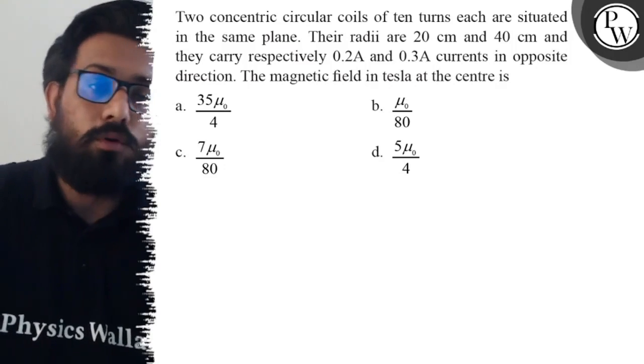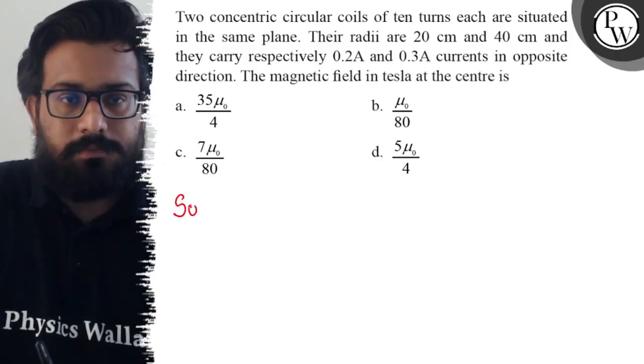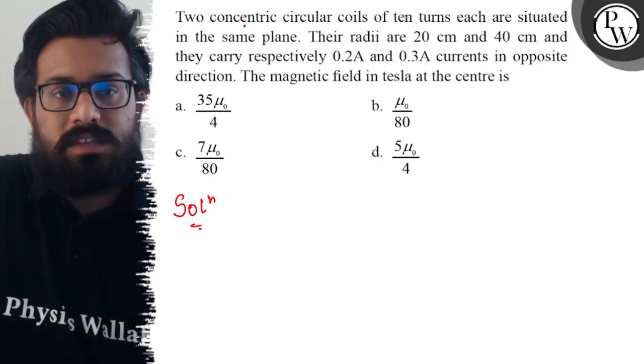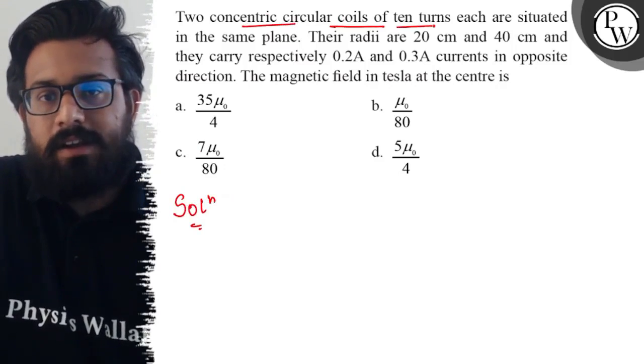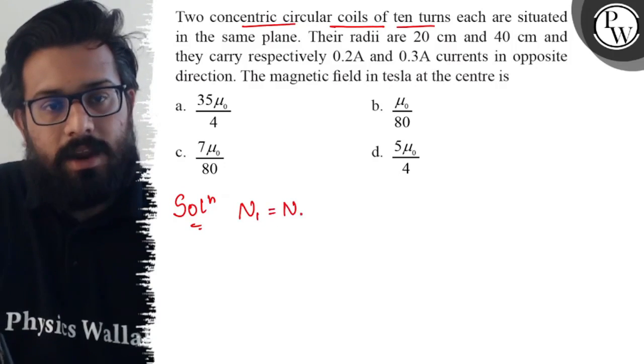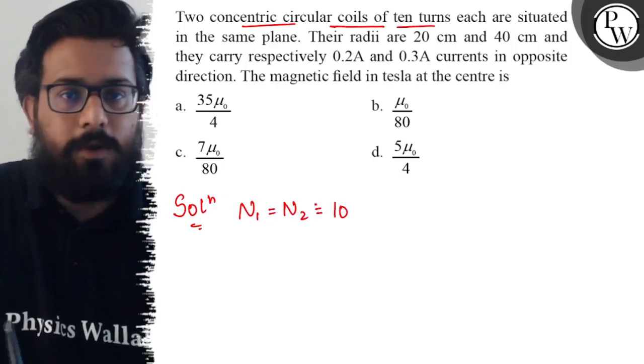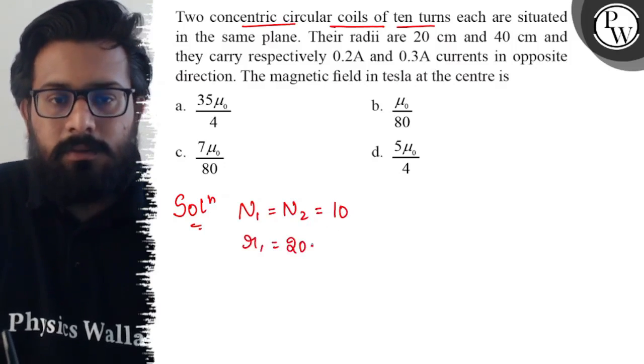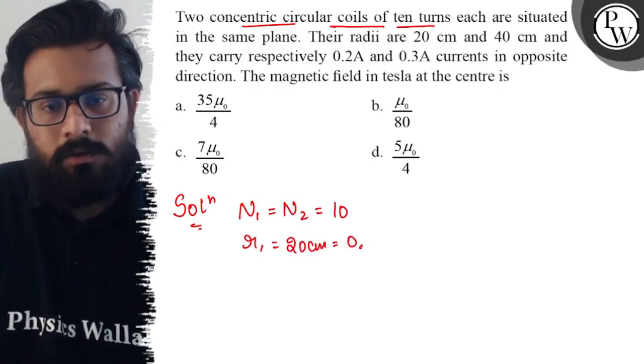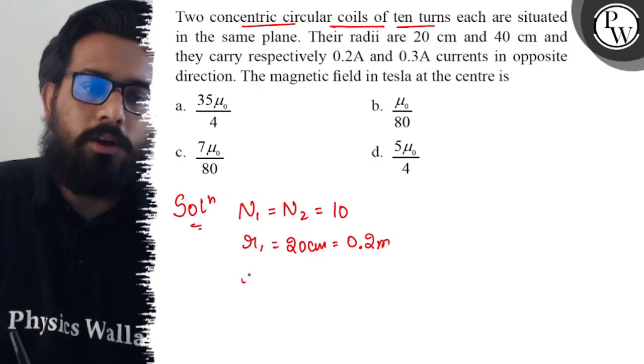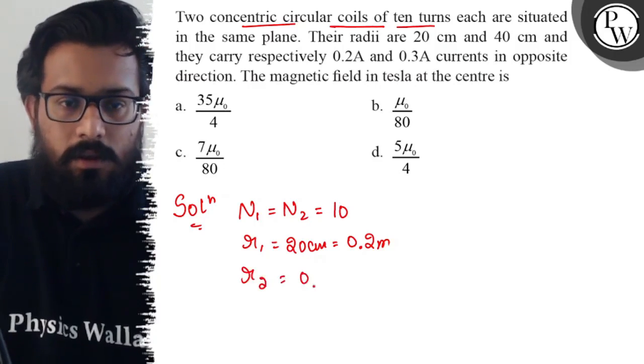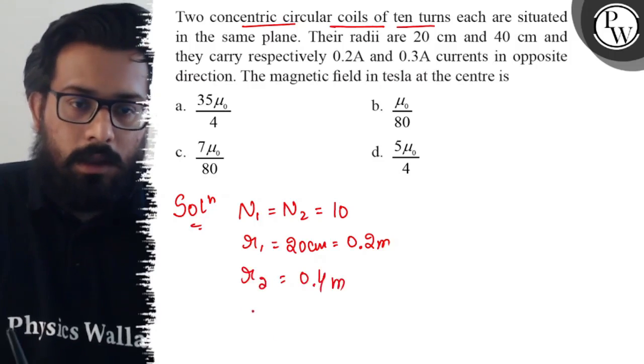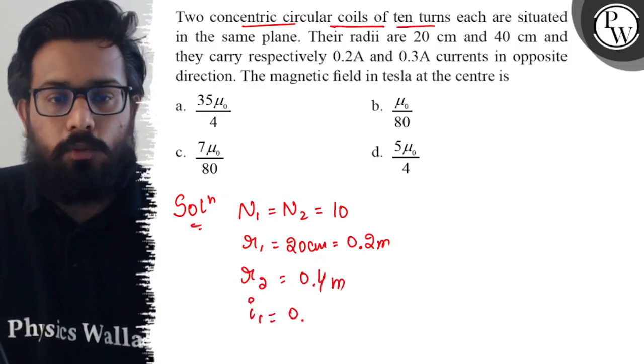So here in this question we have two concentric circular coils having number of turns as 10, so N₁ equals N₂ equals 10. r₁ is 20 centimeter which can be written as 0.2 meter, and r₂ can be written as 0.4 meter. Current in the first part i₁ is 0.2 ampere.